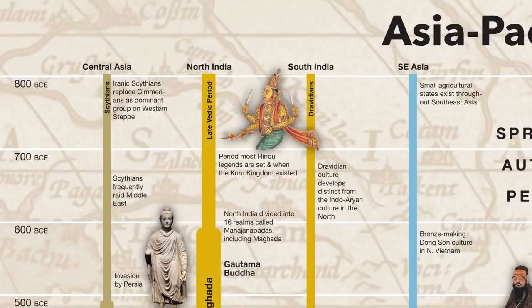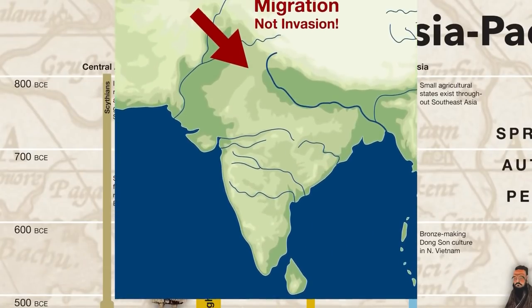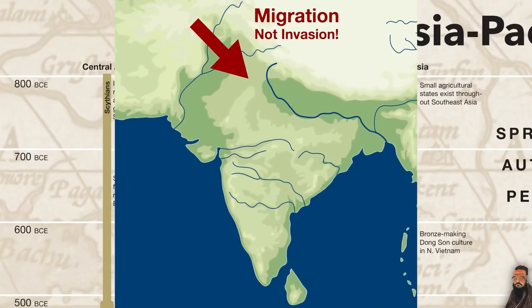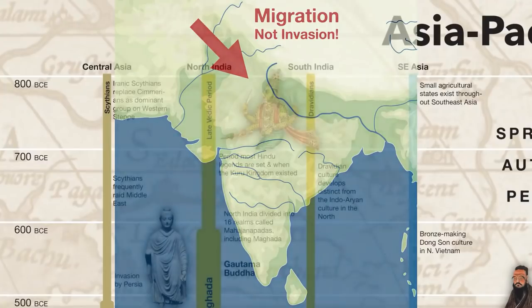But the Aryan invasion theory has now been completely debunked. We now know that a so-called advanced urban civilization existed in the Indus Valley way back when the pyramids in Egypt were still being built. There are clear linguistic and genetic connections between Europeans and North Indians, and this is likely due to Indo-Aryan speakers slowly migrating into the area for at least a thousand years prior to the start of this chart, around the same time that the Indus Valley civilization was declining, perhaps due to climate change.